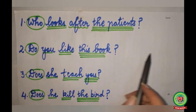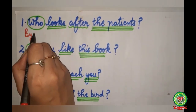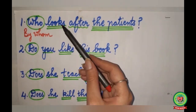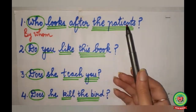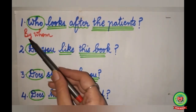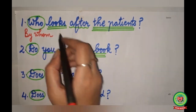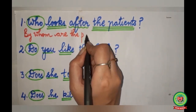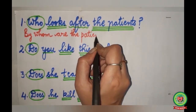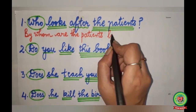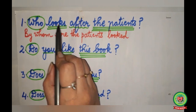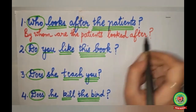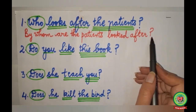We are going to change it to passive. 'Who' will change into 'by whom'. We have to add a helping verb. 'Looks' — the patients will come to the beginning, so with 'the patients' we use 'are'. After 'by whom', 'are', then 'the patients'. 'Looks' will change into 'looked'. The answer: 'By whom are the patients looked after?'